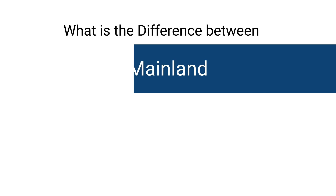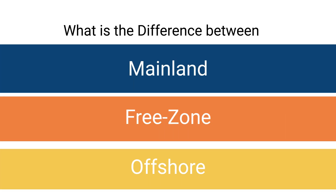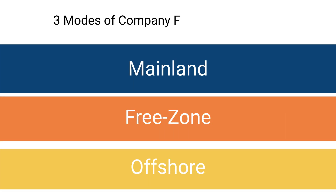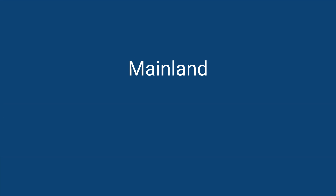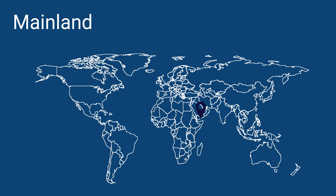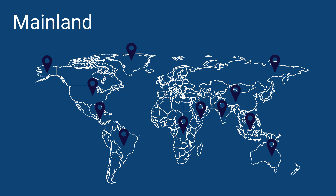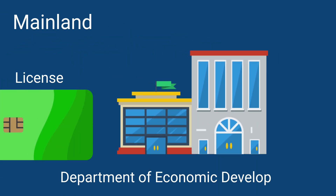What is the difference between Mainland, Free Zone and Offshore Company? There are three modes of company formation in Dubai. Mainland: a mainland company can conduct business in local markets as well as outside the UAE. It is necessary for a mainland company to obtain a license from the Department of Economic Development.